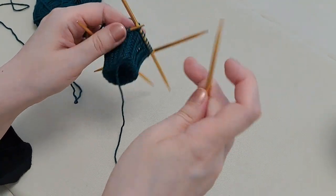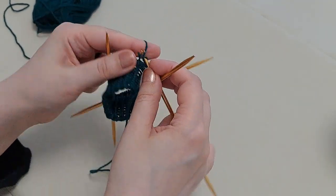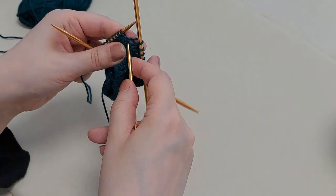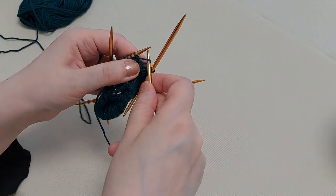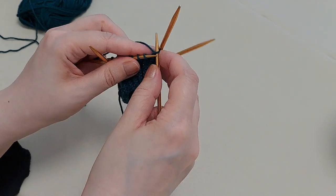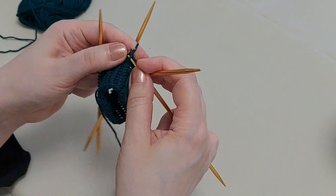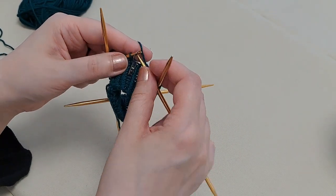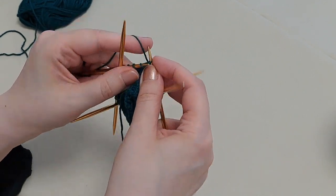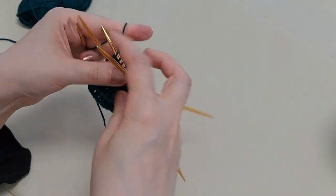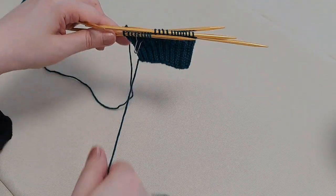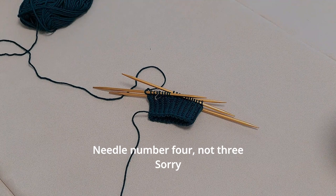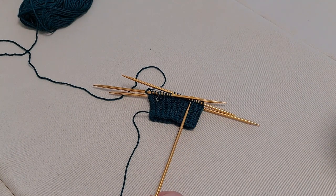I'm going to knit one round and then work the first increase. Now I need to work through needles one, two and three. Now I'm going to pick up yarn from in between the previous round stitches, twist that, pop that onto the needle and knit it. That's my first increase. I'm also going to pop in a stitch marker to remind me where I worked the increase. And just like in the first glove work the increases every second row until you have 20 stitches on needle number three.